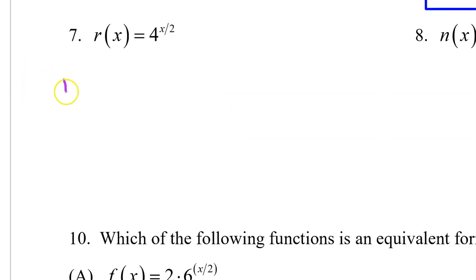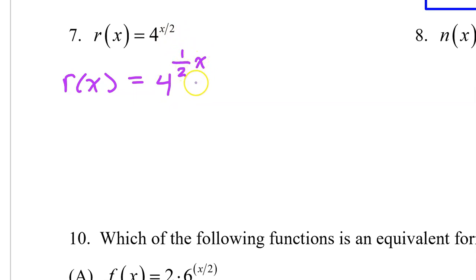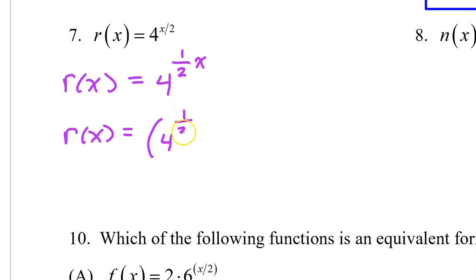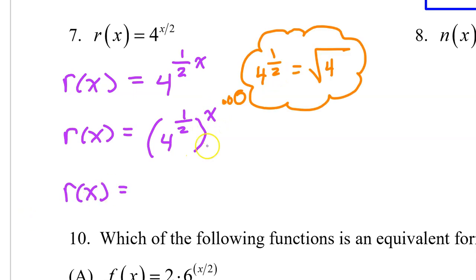For number 7, we use that same property again. First, to be extra clear, x over 2 is the same thing as 1 half times x. So we can write this as 4 to the 1 half power all raised to the x power. 4 to the 1 half power is the square root of 4, which is 2. So this simplifies down to 2 to the x power.